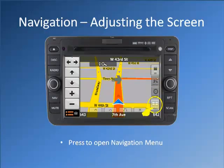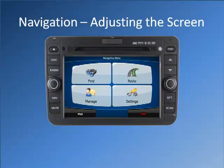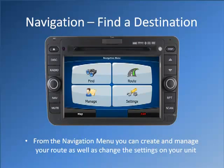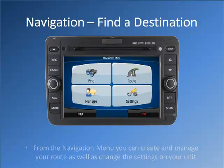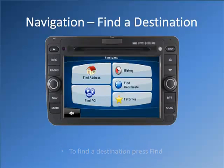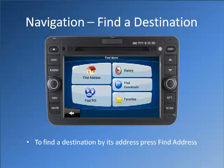Press to open the navigation menu. From the navigation menu, you can create and manage your route as well as change the settings on your unit. To find a destination, press Find. To find a destination by its address, press Find Address.